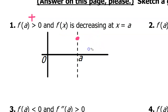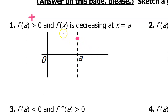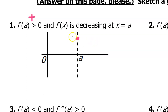I also could have drawn it with concavity — so I could have drawn it concave up like this, or I could have drawn it concave down like this. Either way, it would be decreasing. But I'm just going to go back to a straight line.